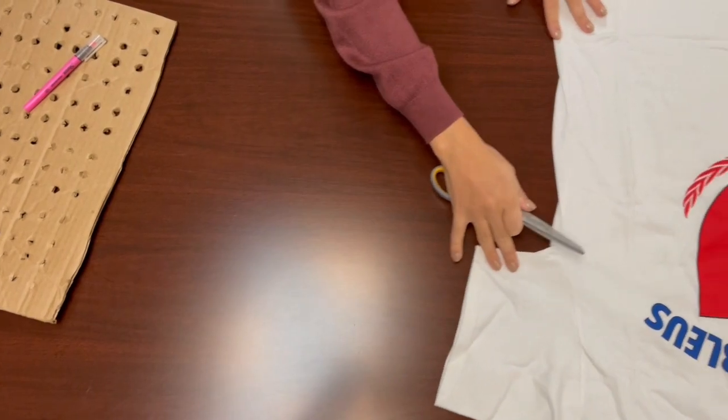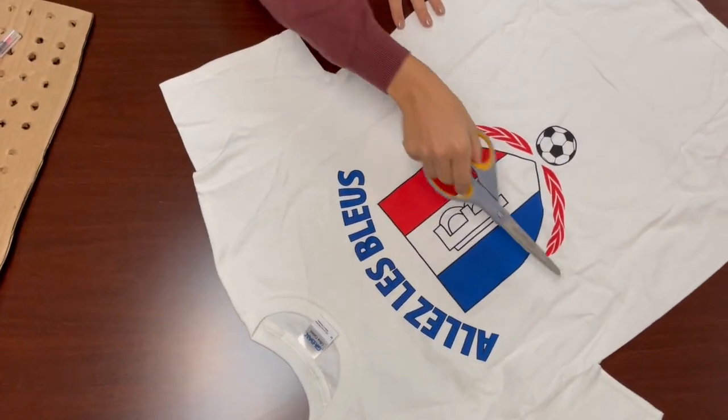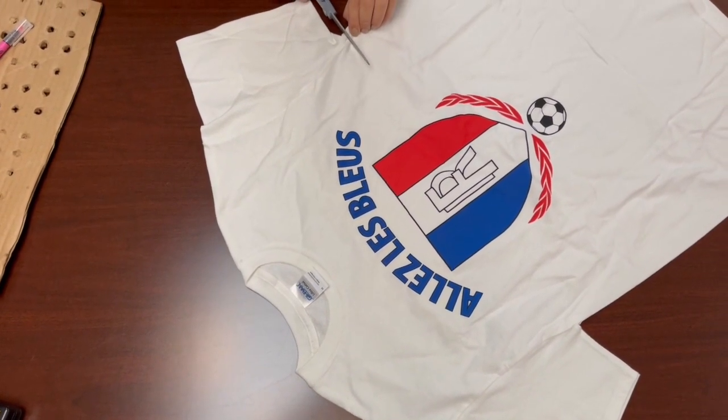You're then going to work on cutting your strips of t-shirt to weave through the holes. You'll start by cutting the sleeves apart from the bottom portion of the t-shirt.